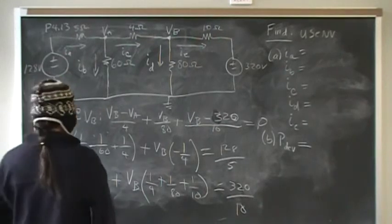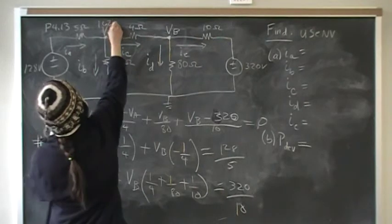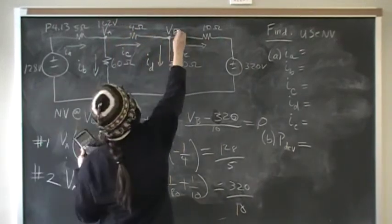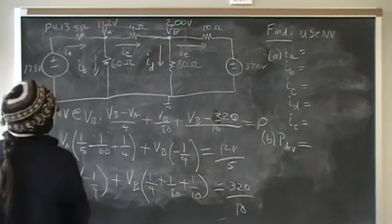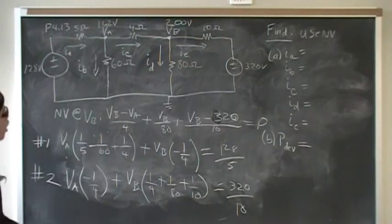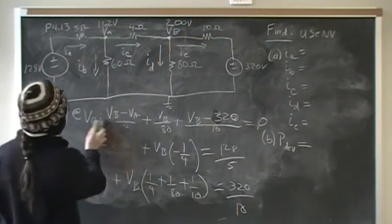I have VA is equal to 162 volts, and VB is 200 volts. Now, now that we have all the equations, we have VA and VB, we can find all of the branch currents.